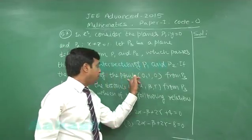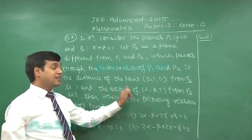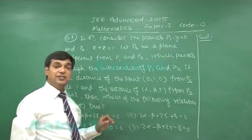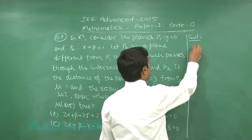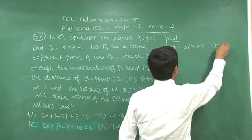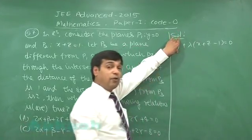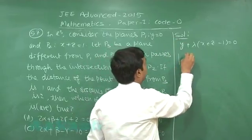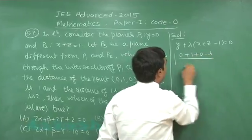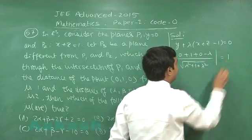If the distance of the point (0,1,0) from P3 is 1 unit and the distance of (α,β,γ) from P3 is 2, then which of the following relations are true? We can say the required plane is y + λ(x + z − 1) = 0. The distance of this plane from (0,1,0), that is (0 + 1 + 0 − λ) divided by √(λ² + 1 + λ²), equals 1.